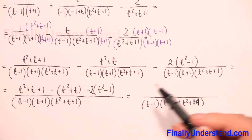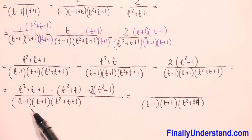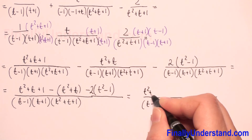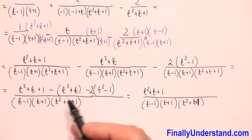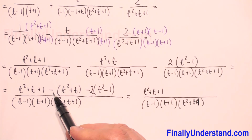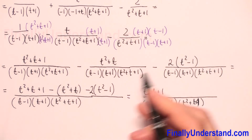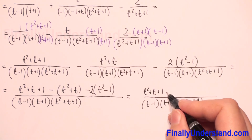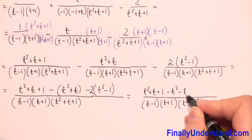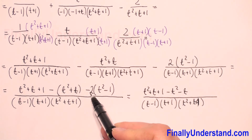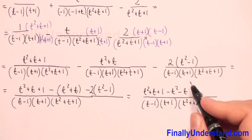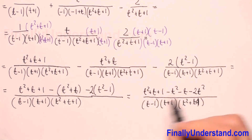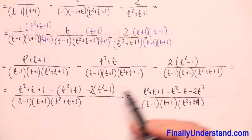So we copy t squared plus t plus one. With the negative sign before the parentheses, we change the signs: it becomes negative t squared minus t. And then negative times negative two gives us positive two.